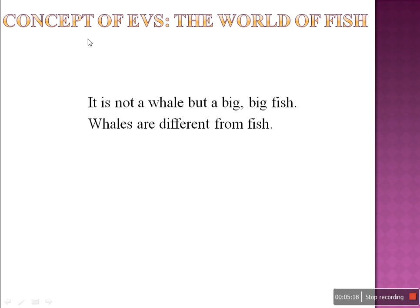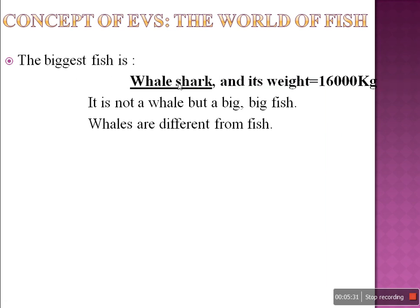Now we will learn some concepts from EBS — the world of fish. Can you tell what the biggest fish is? The whale shark. And do you know how much it weighs? It has 16,000 kg weight. Can you imagine how heavy it is? A student of class 5 may have 20 kg or not more than 30 kg. But this whale shark is 16,000 kg — you can imagine how heavy it is. But it is not a whale, but a big, big fish.